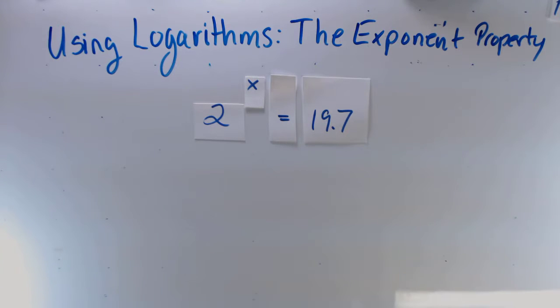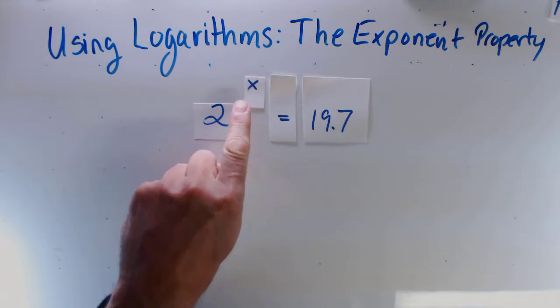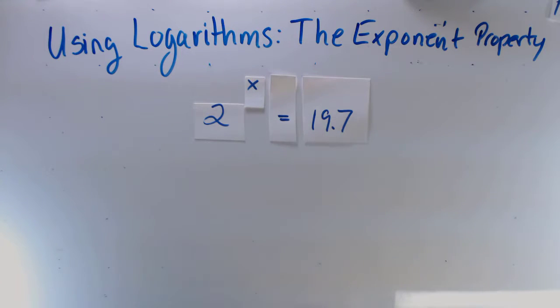We are going to use the exponent property of logarithms to determine the value of the exponent in this expression: 2 to the exponent x equals 19.7.